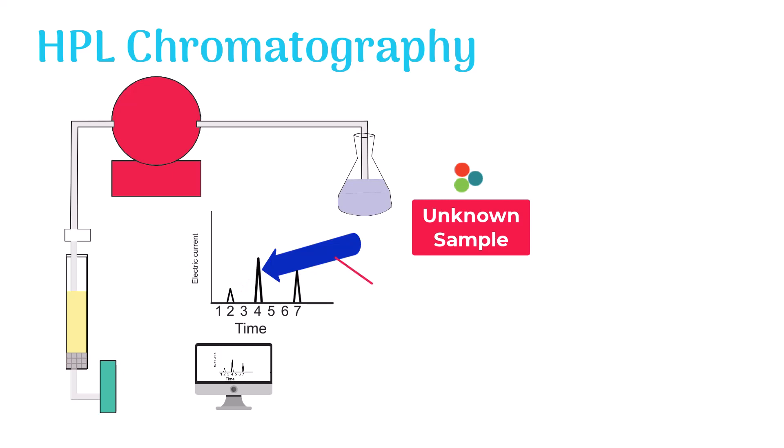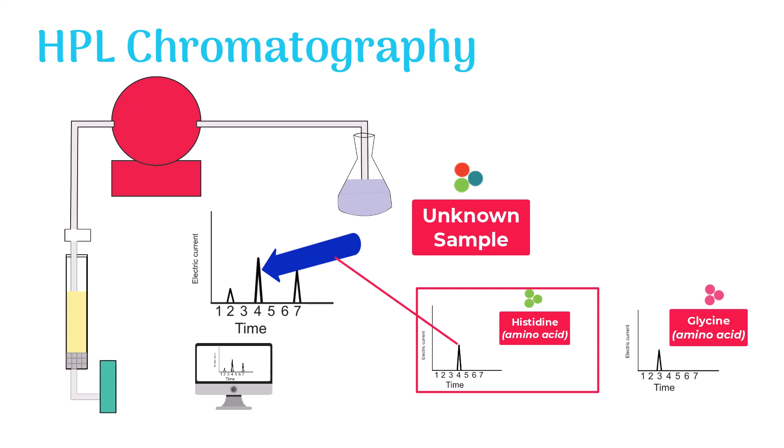The peak at 4 minutes depicts histidine in the sample. This means the sample has histidine but lacks glycine as it shows no peak at time 3 minutes.